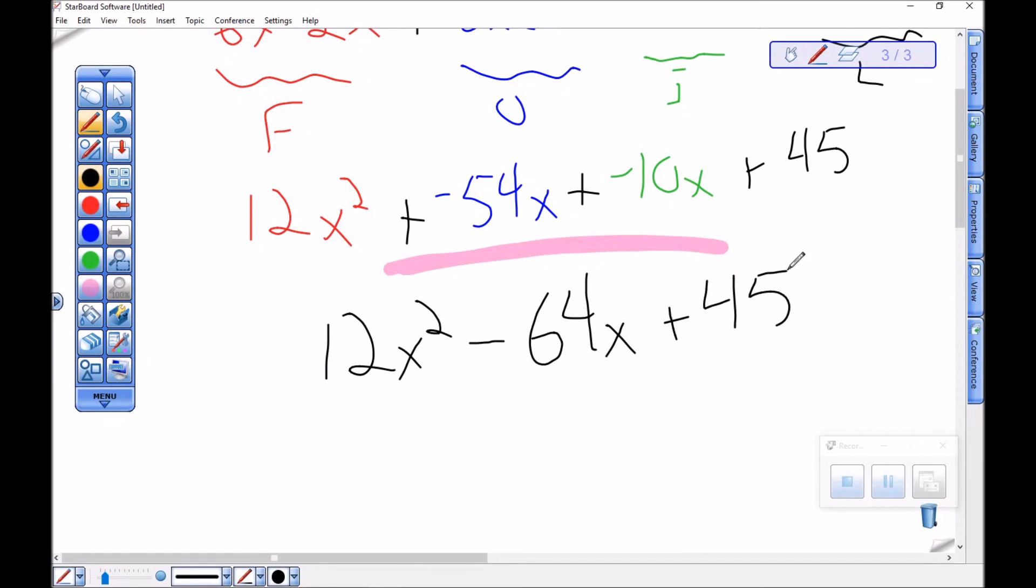So there is using FOIL, one of the ways we have available to multiply two binomials together.